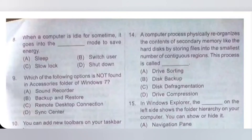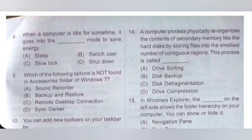Question 14: A computer process physically reorganizes the contents of secondary memory like the hard disk by storing files into the smallest number of contiguous regions. This process is called dash. Option A: Drive sorting. Option B: Disk backup. Option C: Disk fragmentation. Option D: Drive compression. So this process is called disk defragmentation. Option C is the correct answer.